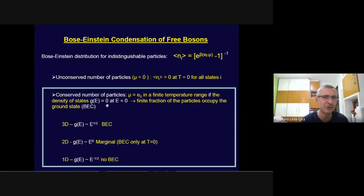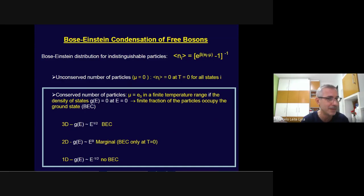If the energy is purely kinetic, the ground state has zero energy. A key condition for condensation of free bosons to occur is that the density of states must go to zero at the bottom of the energy band. When this happens, a finite fraction of the particles occupy the ground state over a finite range of temperatures. Only the ground state can be occupied by a macroscopic number of particles below a finite transition temperature.